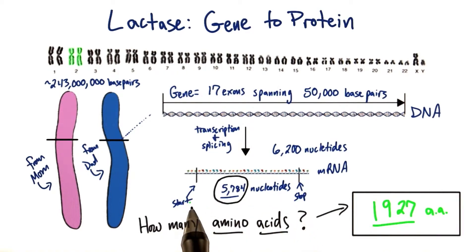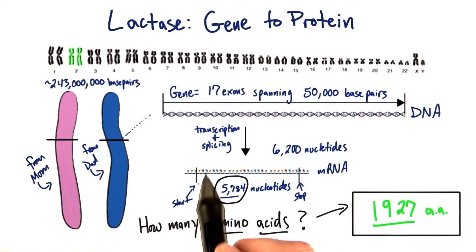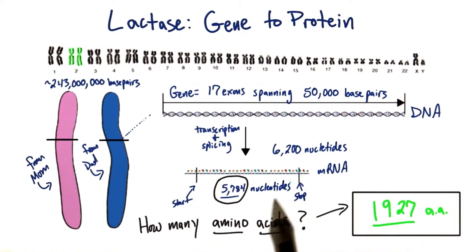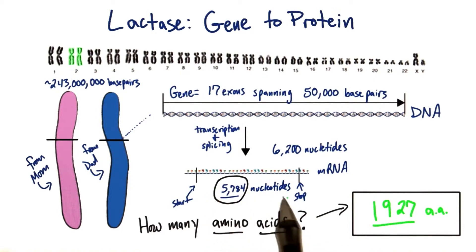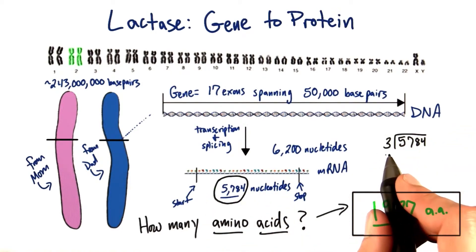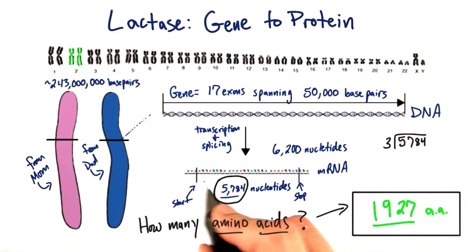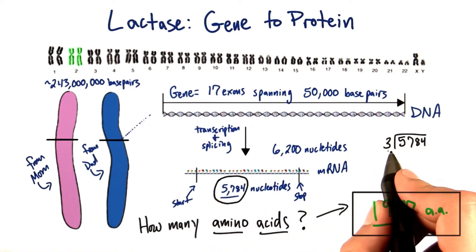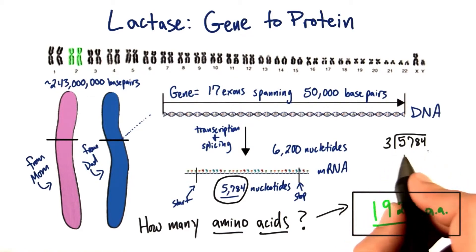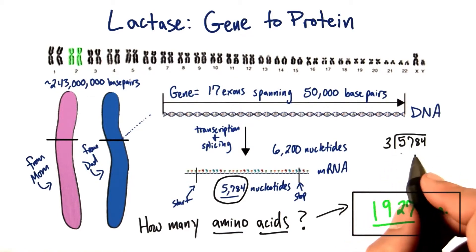We know that between the start and stop codons, the ribosome starts reading at the start codon and stops reading at the stop codon. And for this sequence, we have 5,784 nucleotides. So if we actually divide by 3, which is the number of nucleotides in a codon — the section that a ribosome reads — and divide that into the total number of nucleotides we get...